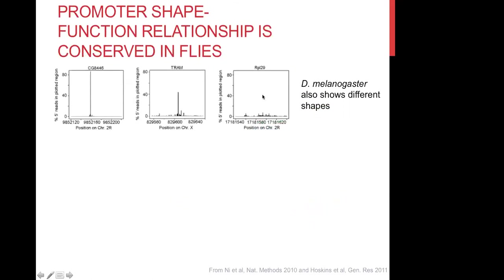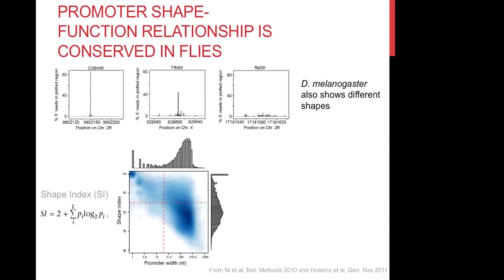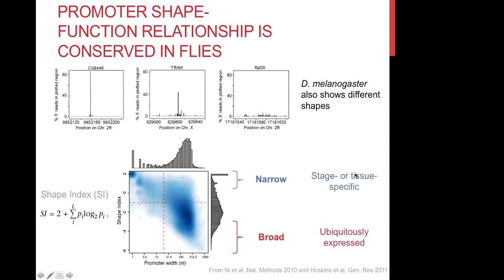There are three examples of promoters with very different shapes. We can quantify this using a shape index, as found in the Hoskins et al. paper where CAGE was done for Drosophila embryos. This is a measure of entropy — how ordered the initiation sites are in a promoter — shown on the y-axis of these plots, while the x-axis is the promoter width. It varies almost continuously, although with many very narrow promoters clustered at one end. Taking the narrow and broad promoters, you see the same pattern: narrow promoters are condition-specific, while broad promoters are ubiquitously expressed genes.